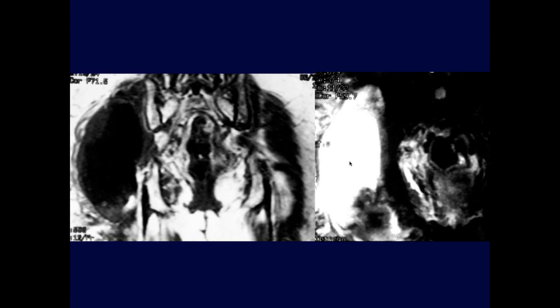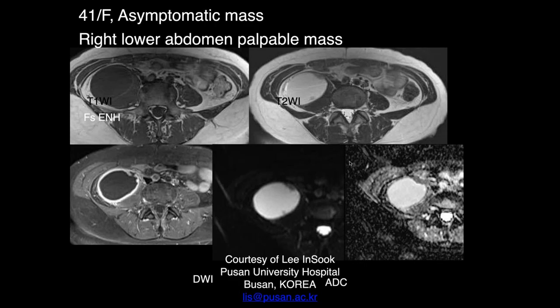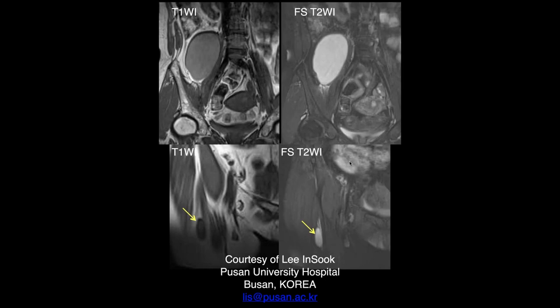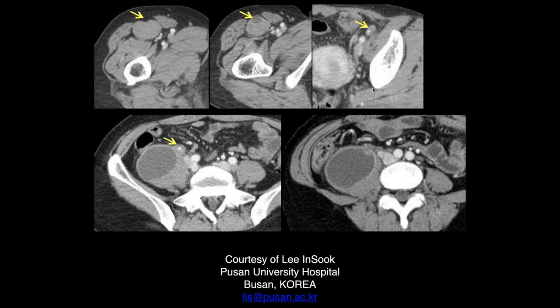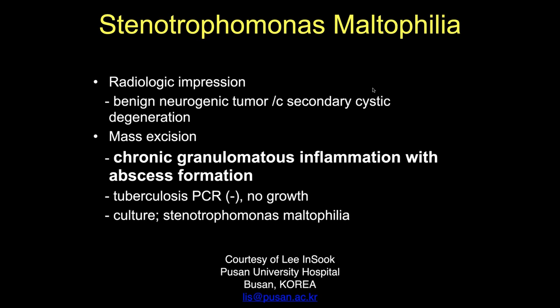A 41-year-old female with an asymptomatic palpable right lower abdominal mass. The CT shows a large cystic lesion with thickened peripheral rim enhancement involving the right psoas and a second cystic focus inferiorly. Despite the patient being asymptomatic, this is concerning for abscess. Enhancement kinetics show rapid uptake consistent with inflammation. There is also calcification present.